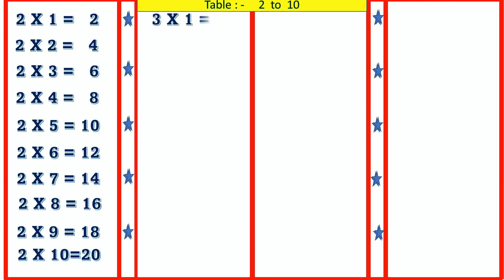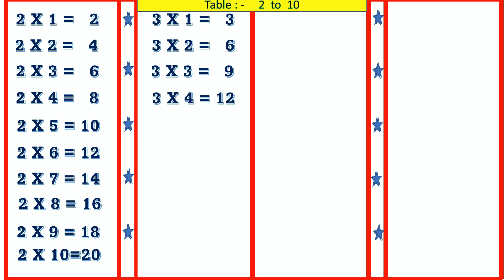3 1's are 3, 3 2's are 6, 3 3's are 9, 3 4's are 12, 3 5's are 15.